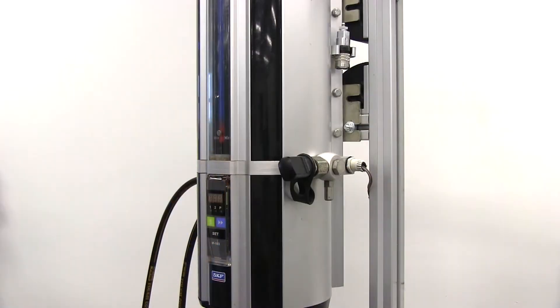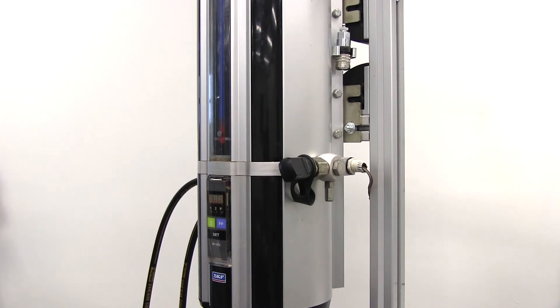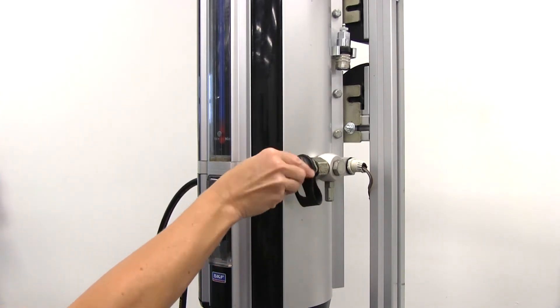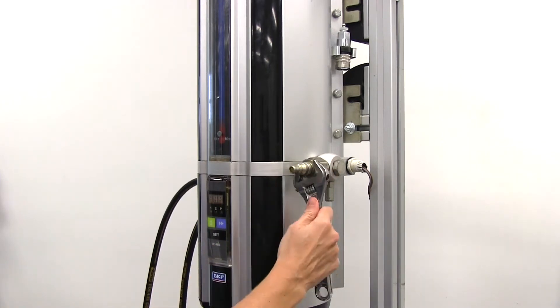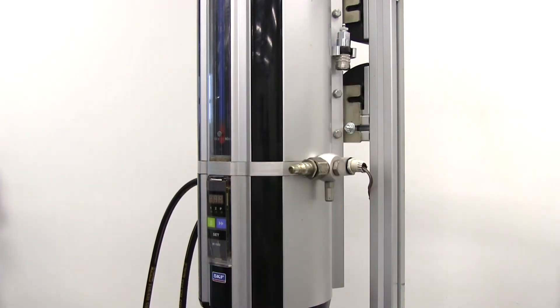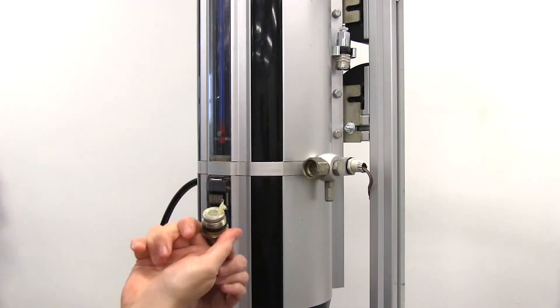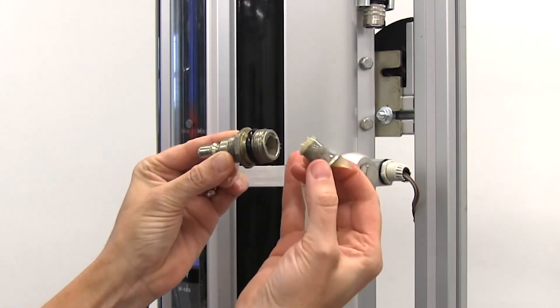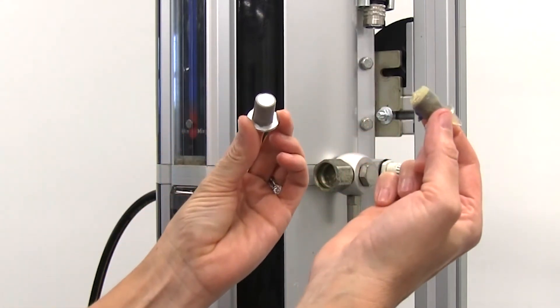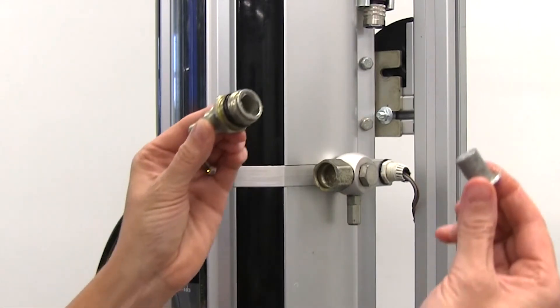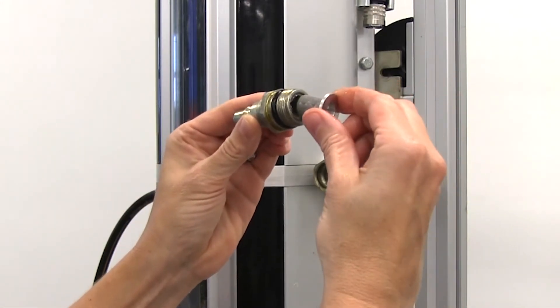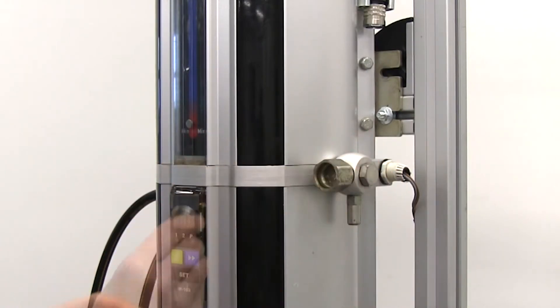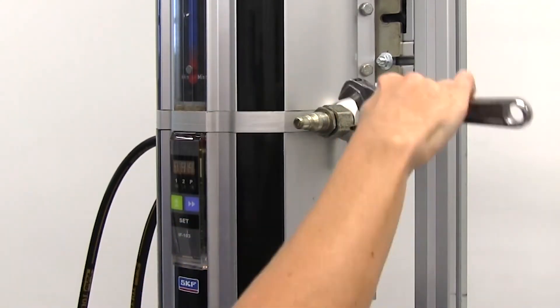So let's get started. The first step is to check the condition of the grease filter. Mounted on the fill port is a filter to help remove debris from grease being added to the unit. To access the filter, remove the male quick disconnect fitting from the fill port on the control unit. Then remove the filter from the base of the male quick disconnect fitting. Clean the filter in a non-caustic solvent or acquire a replacement filter. Install the cleaned or new filter in the male quick disconnect fitting and install it back onto the fill port.